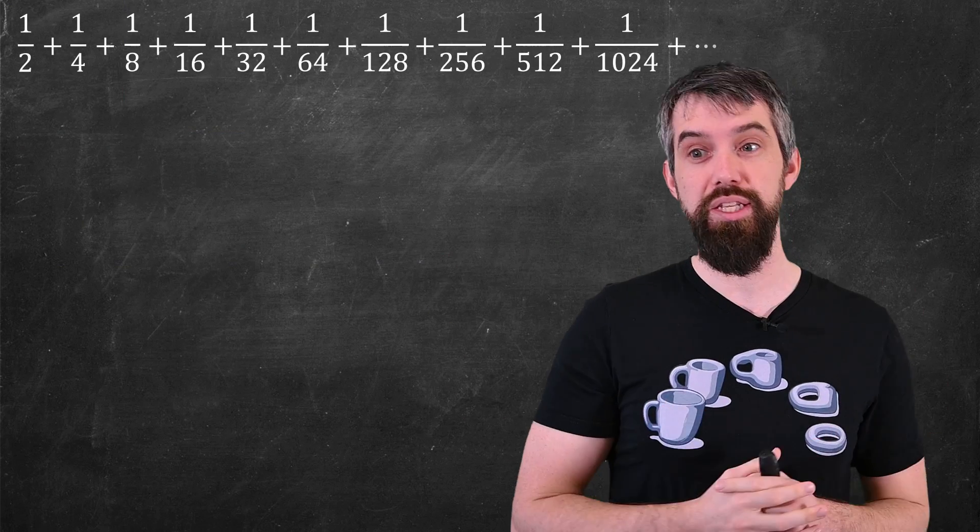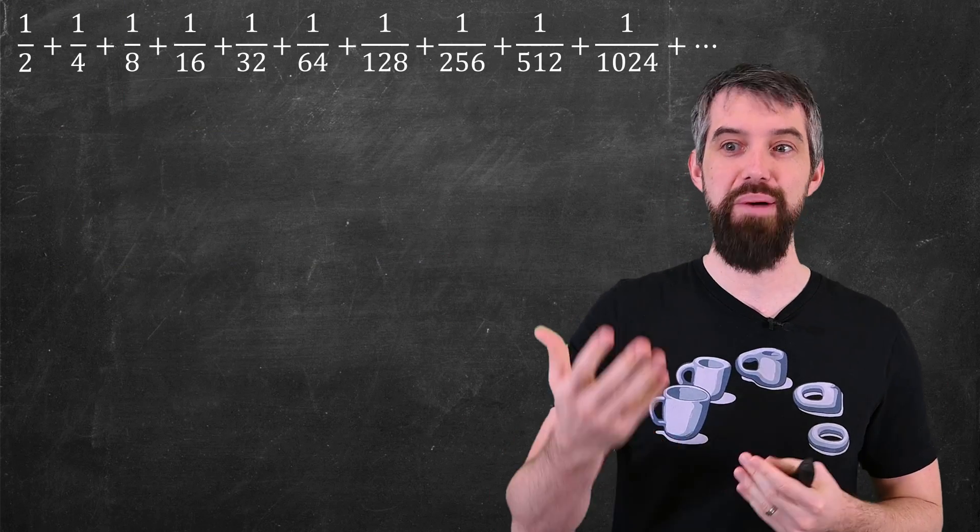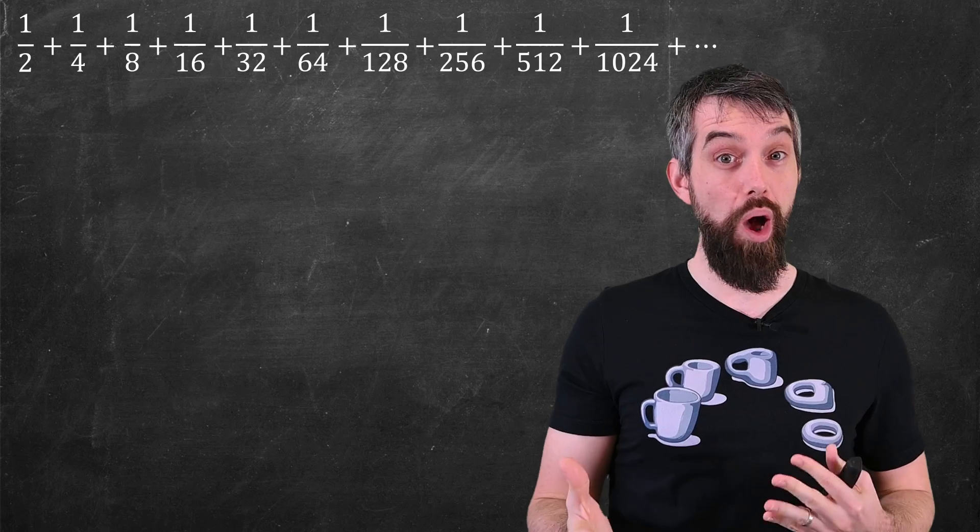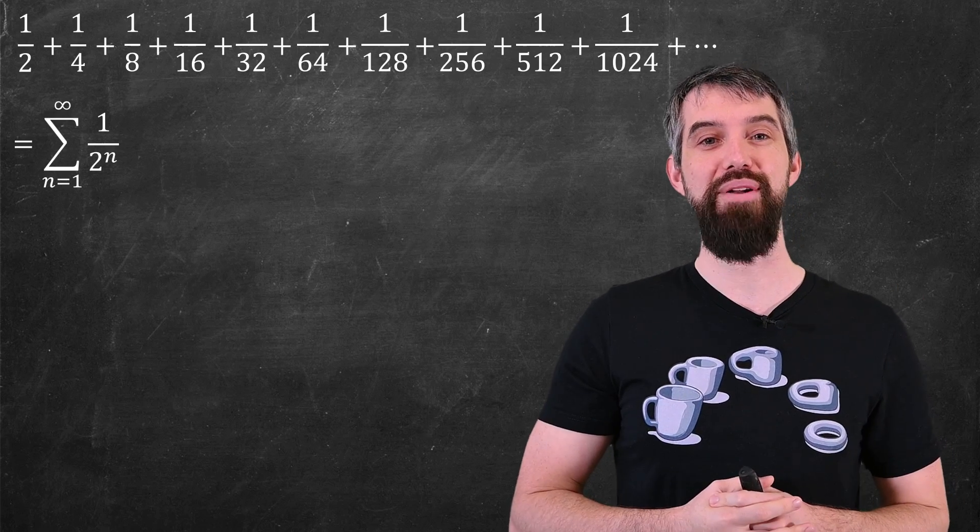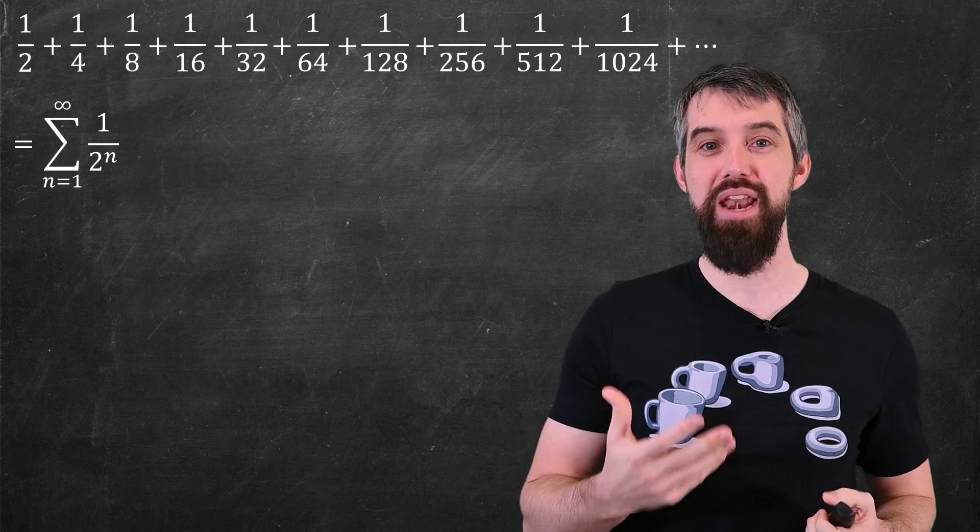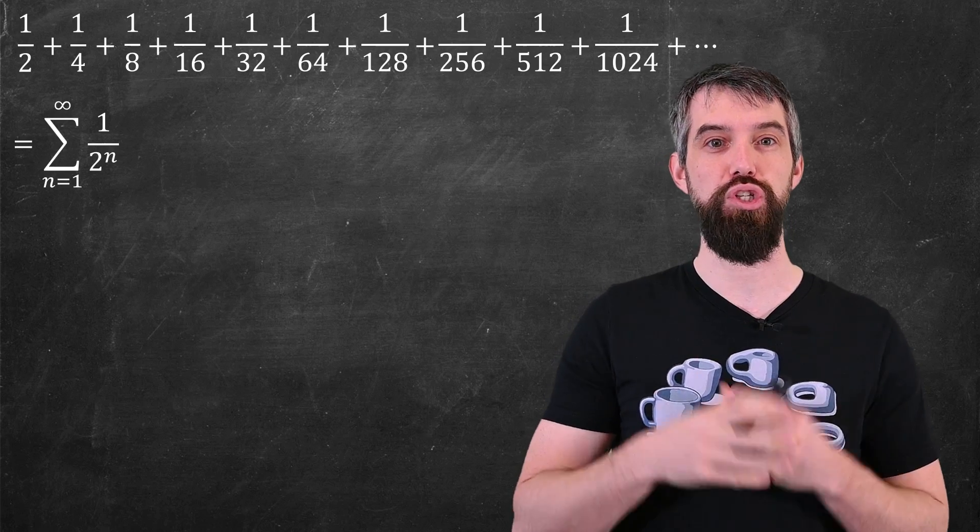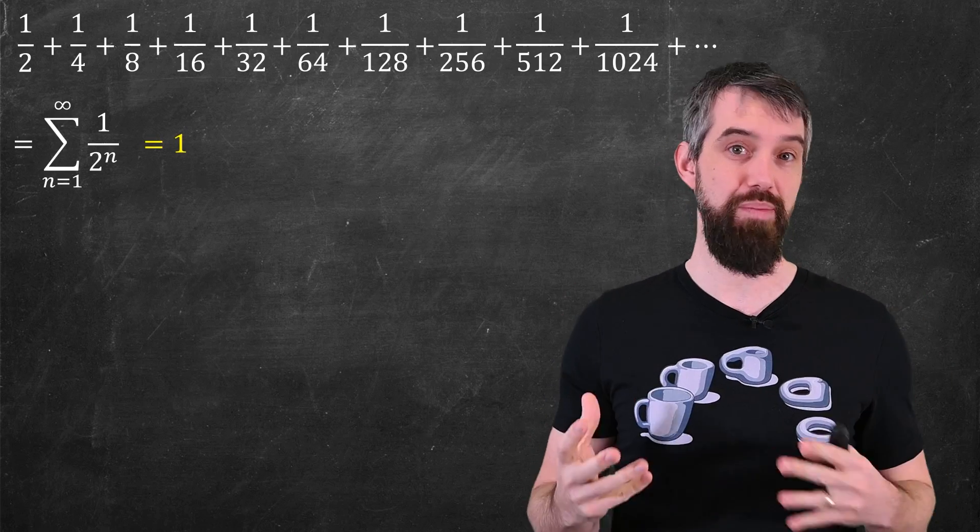The equations behind this series is that the infinite sum of a half plus a quarter plus an eighth and so on, which we often write down as the sum of one over two to the n, that this can be shown to converge to one, the famous geometric series.